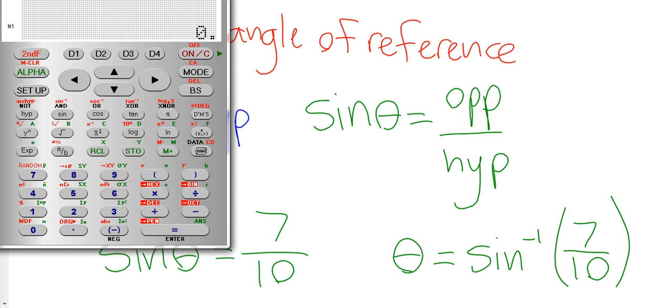I'm going to make sure my calculator is in degree mode, and we are going to punch in the sine inverse. So that's 2nd function, sine of 7 divided by 10.